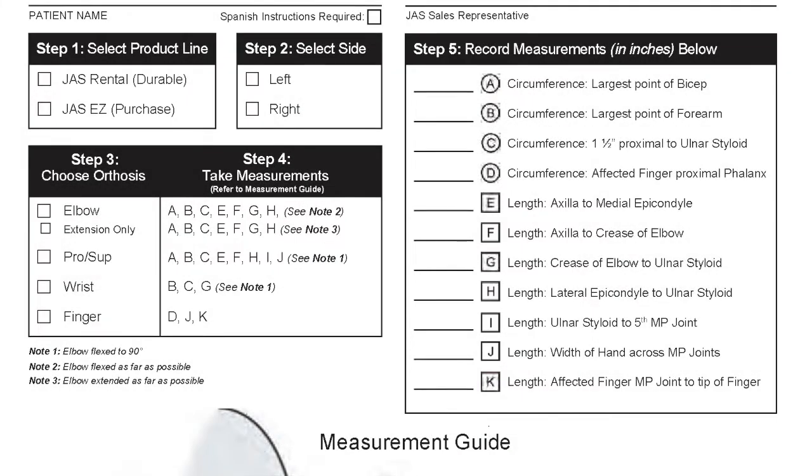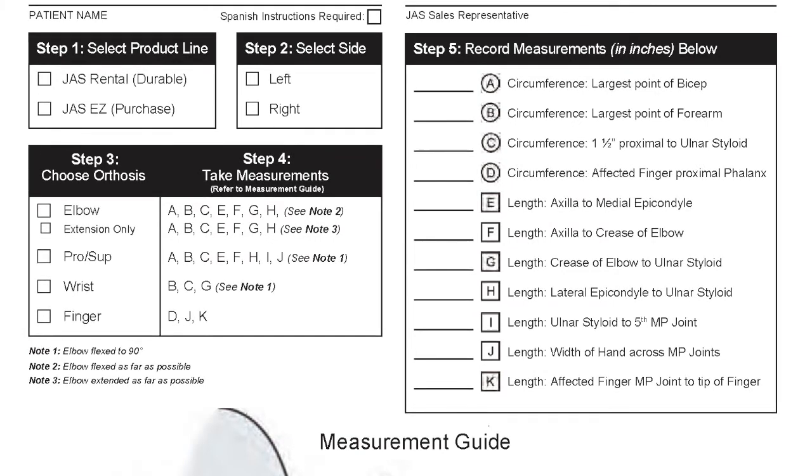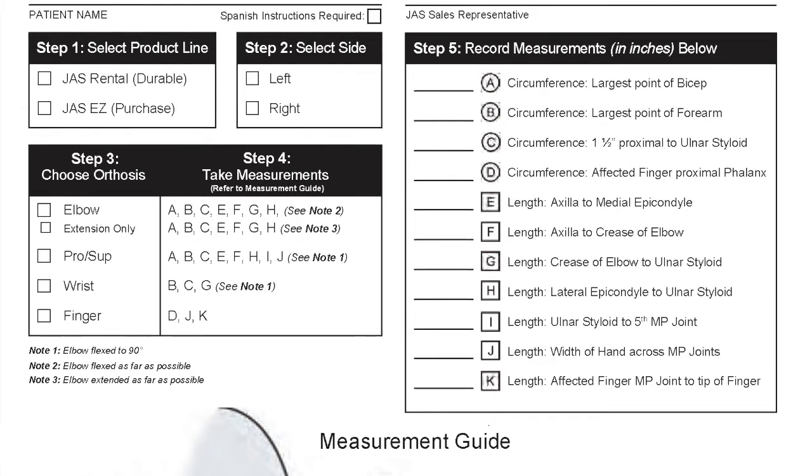Step 1. Select the appropriate product line for the patient, Rental or EZ. Step 2. Select the affected side the JAZZ orthosis will be used on. Step 3.